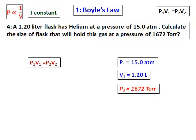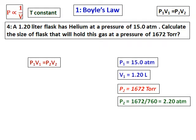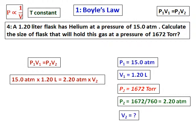Since the units of pressure must match, convert 1672 torr to atmospheres by dividing by 760. Then substitute all values into the formula to solve for V2. The only difference here is the unit conversion for pressure, and the resulting volume comes out in litres as 8.18 litres.